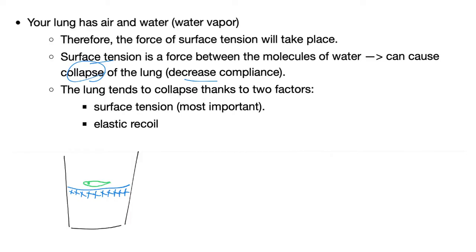The lung tends to collapse thanks to two factors. Number one is surface tension — and it's the most important one. Number two is elastic recoil, and it's not as important. So it's surface tension primarily, then some elastic recoil, thanks to the elastic fibers in your lung, especially elastin. If it ends in -in, it's probably a protein.